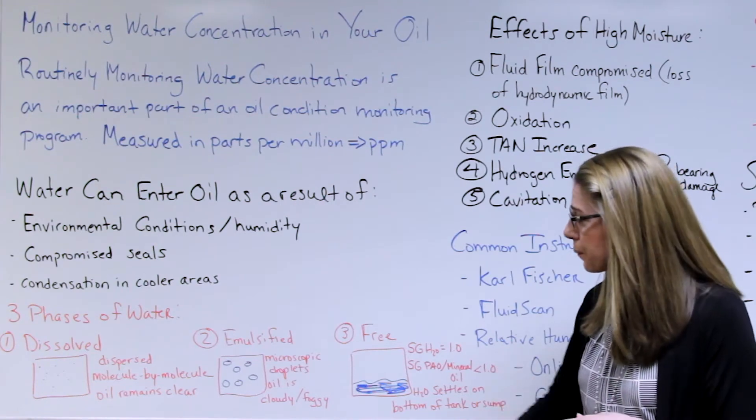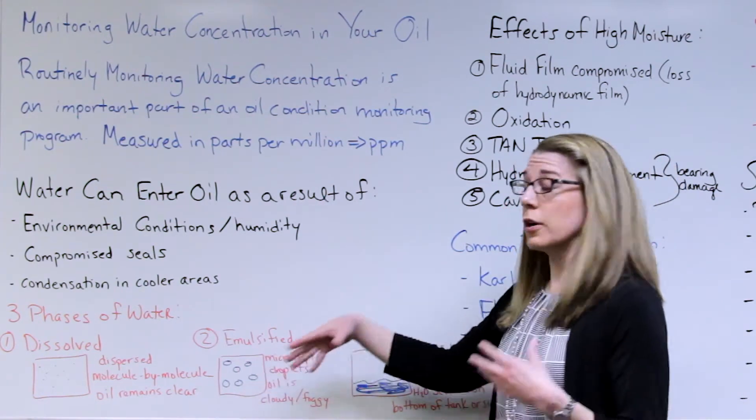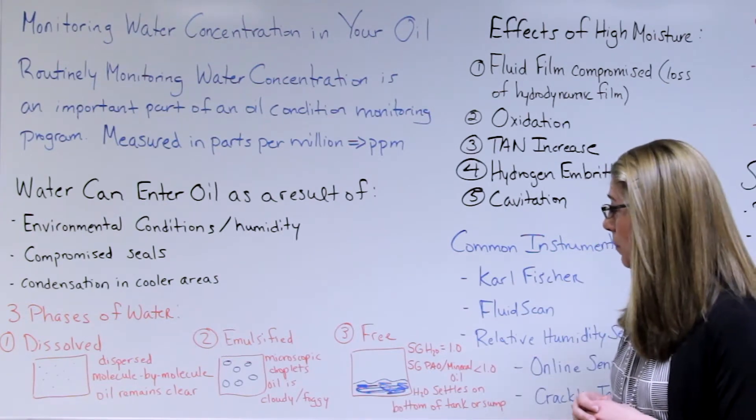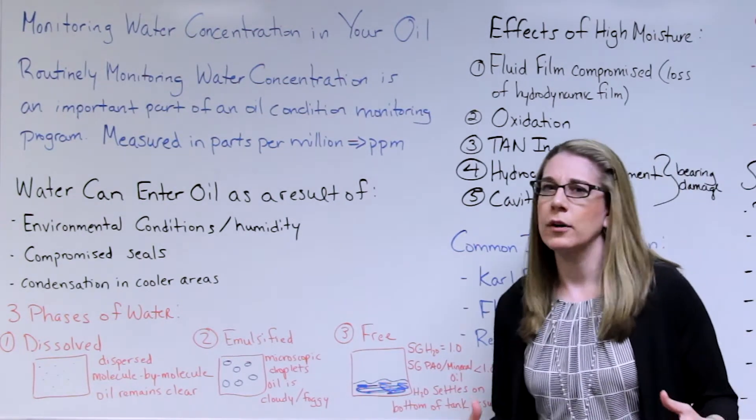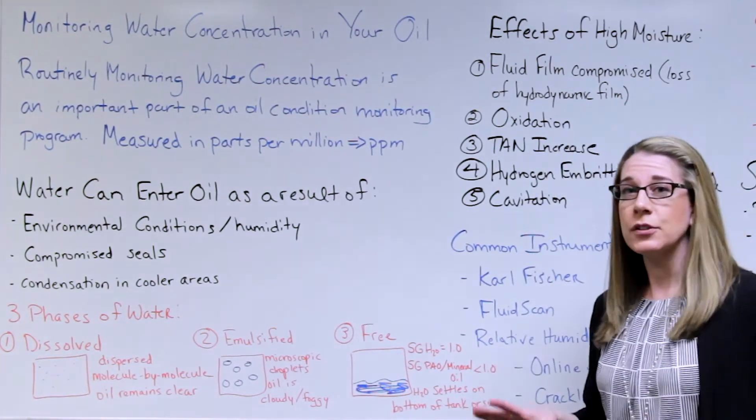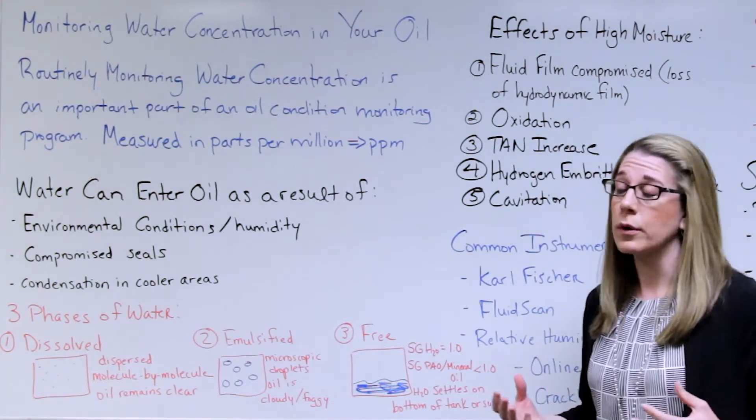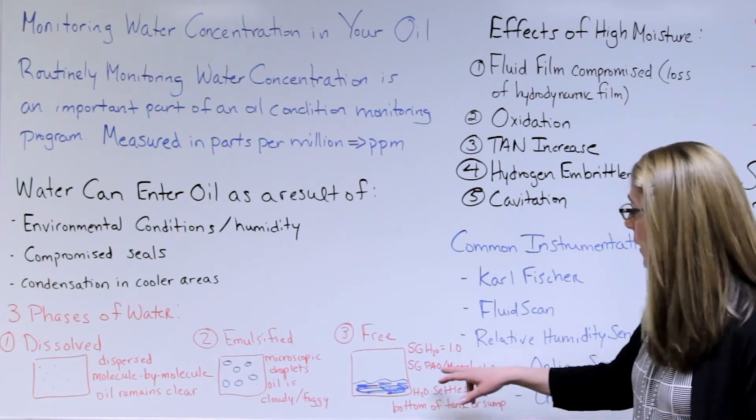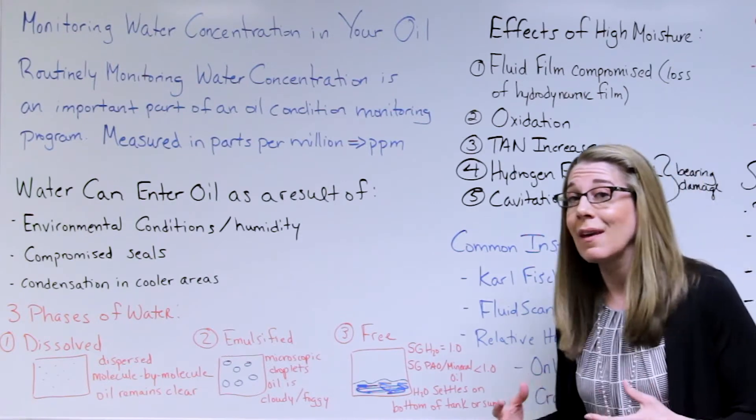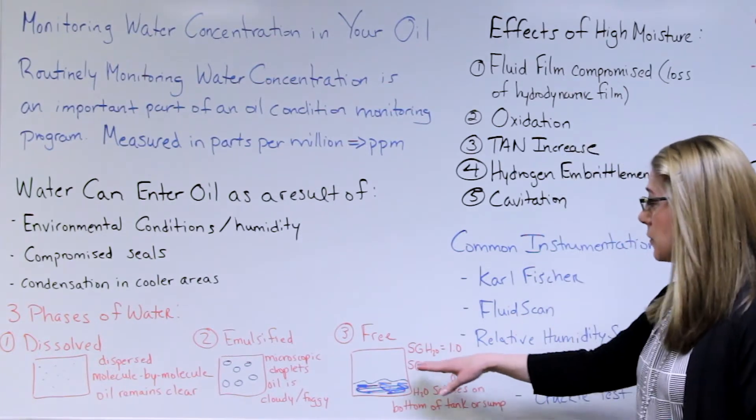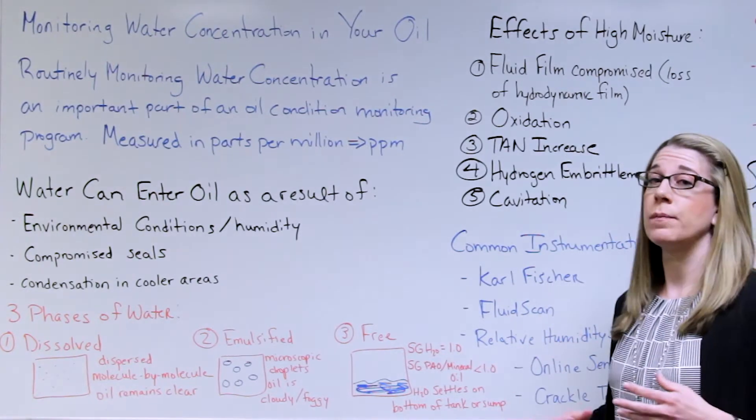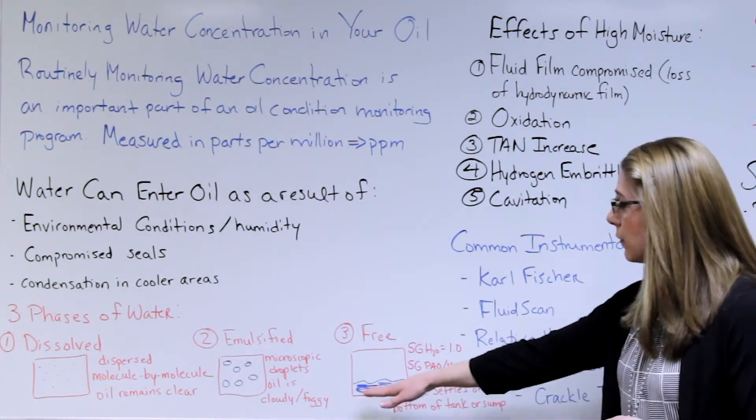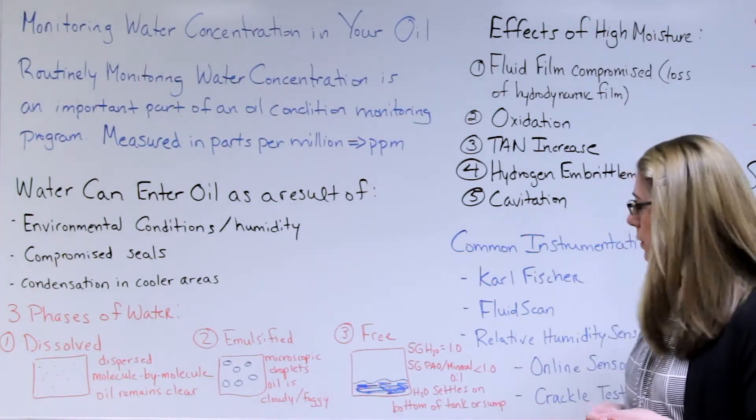Once we hit that point where it's no longer an emulsion, we start getting free water that's sitting in the bottom of the sump or tank. Why does water sit at the bottom of the tank? It has to do with specific gravity of the water versus the oil. Typically in PAOs, so PAO synthetics and mineral oils, we have a specific gravity that's less than one, and the specific gravity of water is one. That water is going to sink to the bottom of the sump or tank. If you've ever seen that, that's the point where you have free water in your system.